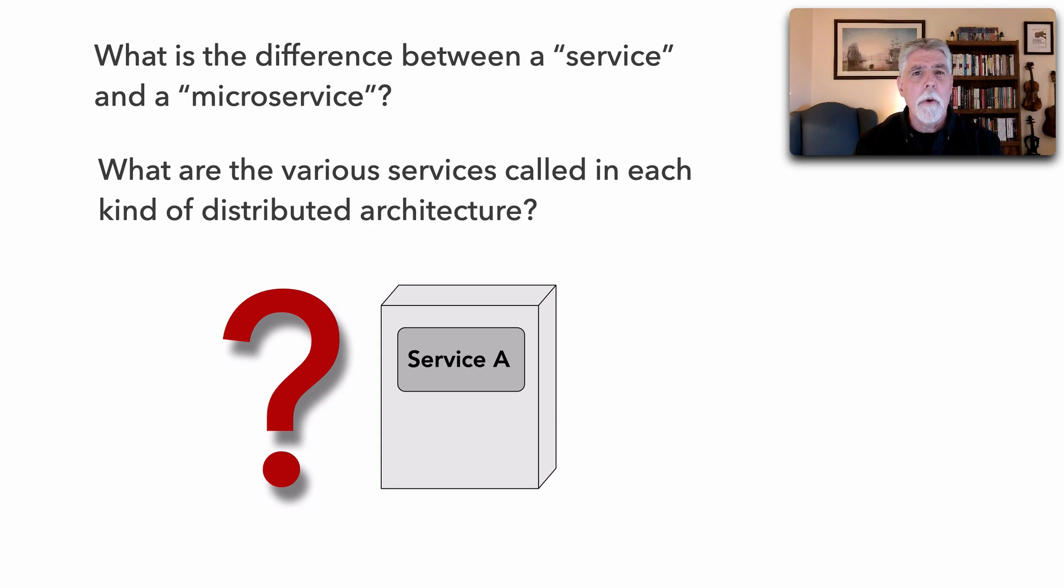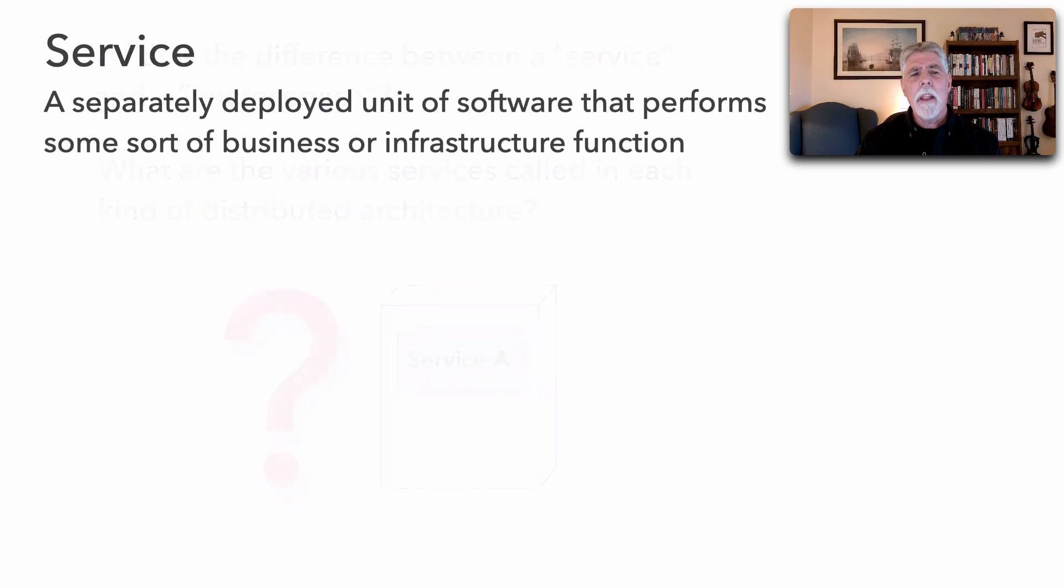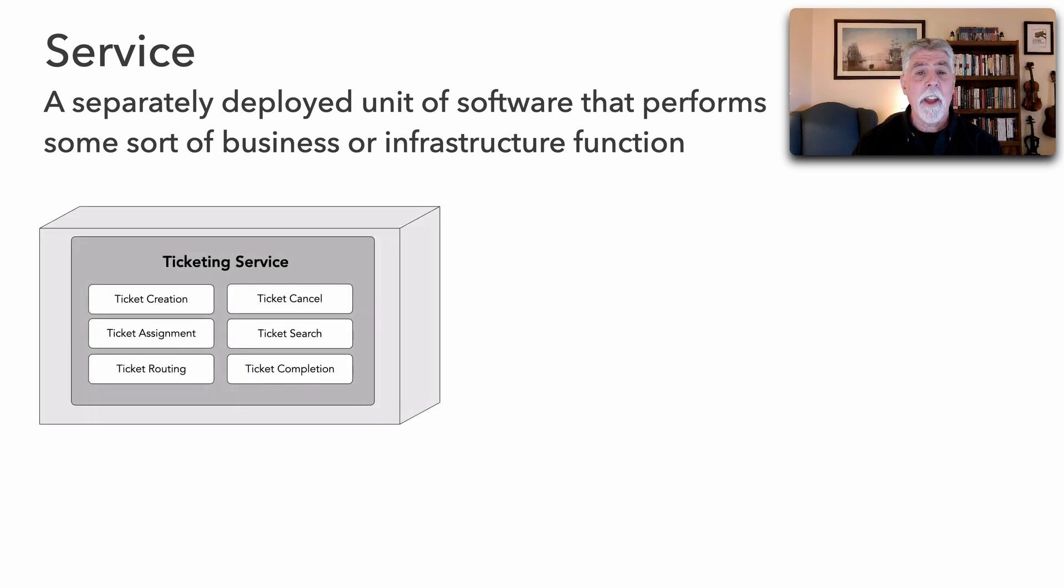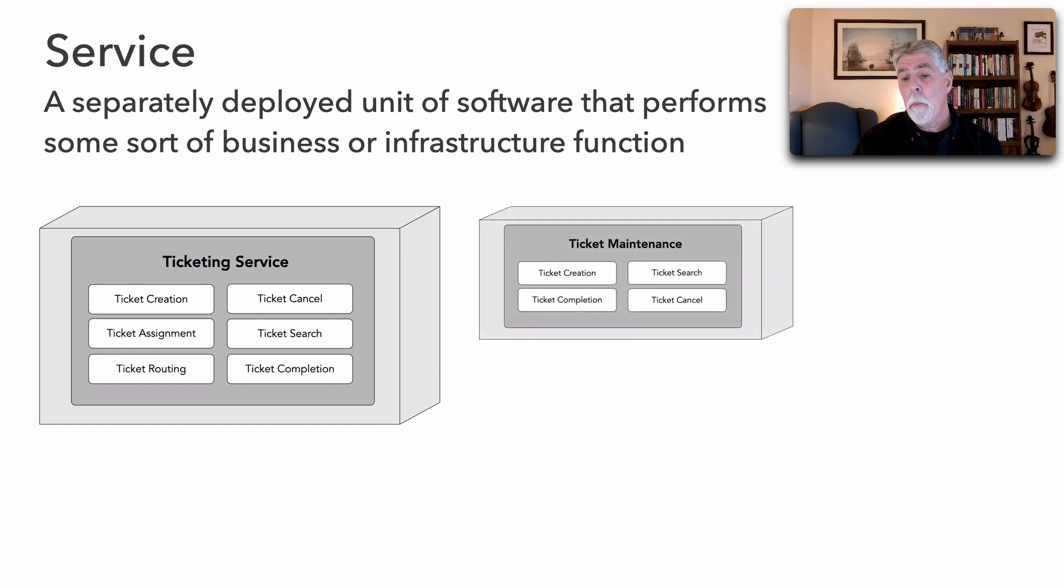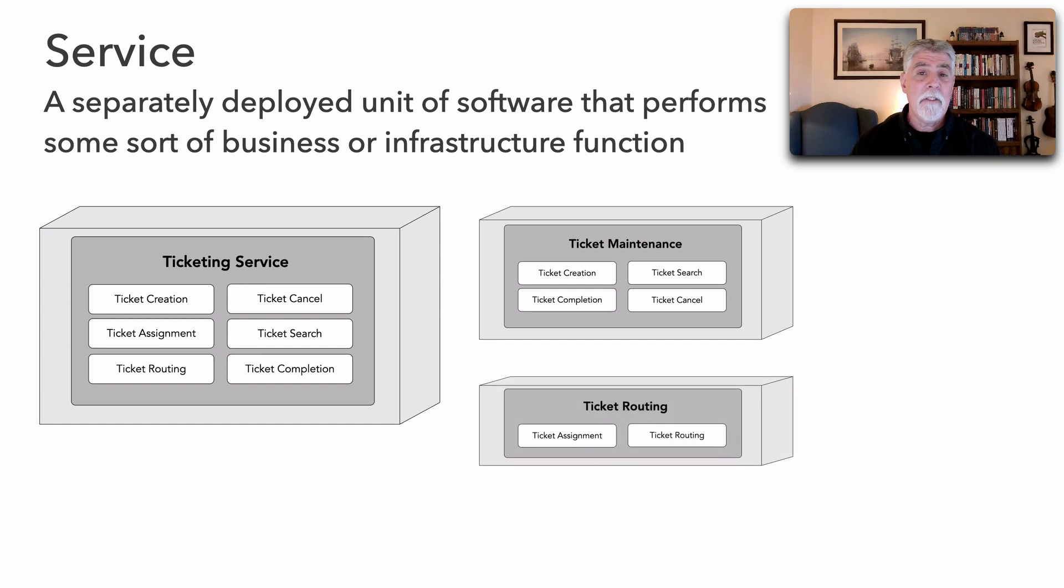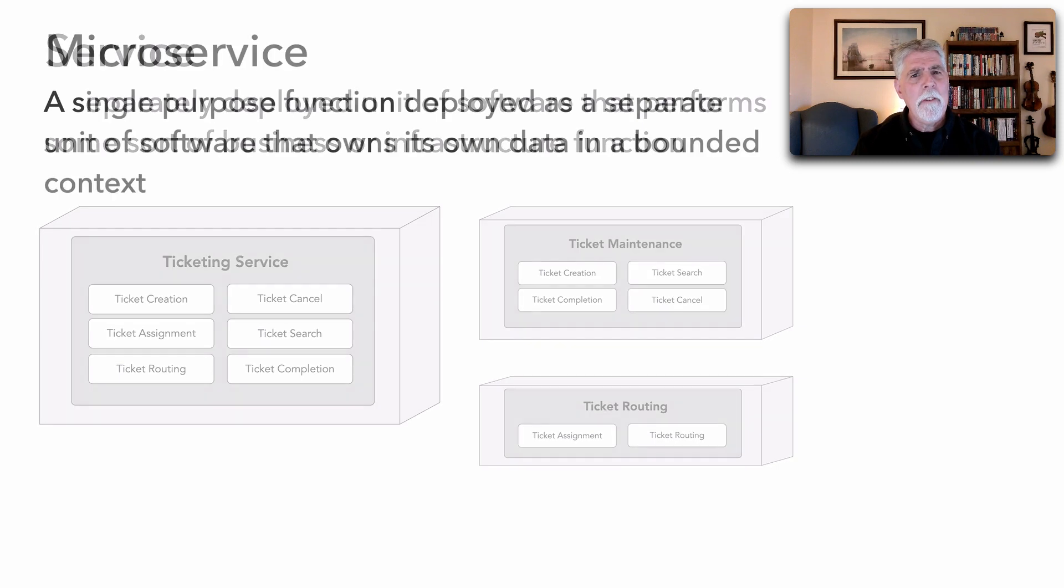If you look at the definition of a service, it's a separately deployed unit of software that performs some sort of business or infrastructure function. For example, here's a ticketing service that you can use on a problem ticket system to create, cancel, route, or assign tickets. Here's one with ticket maintenance, and this one that just does ticket routing. Notice we vary a lot with the granularity when we just talk about a service.